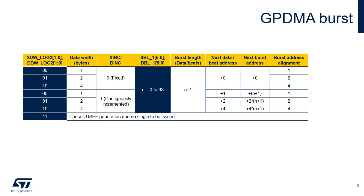When the source or destination address increment mode is selected, the address is automatically updated at the end of a burst with the burst size in byte units, which is equal to the burst length plus 1 multiplied by the data width. When the burst length is 1, the burst can be called a single.